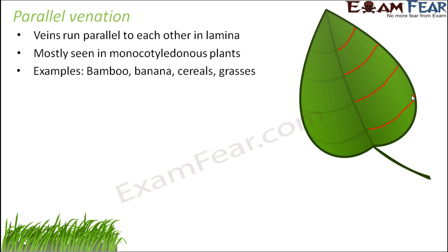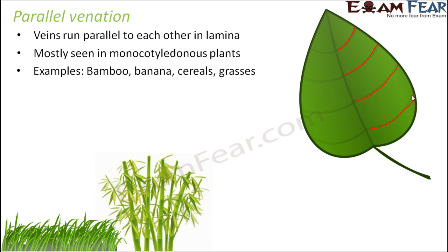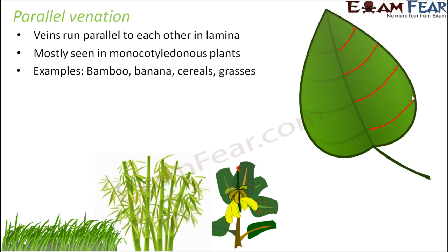Parallel venation is generally seen in monocotyledonous plants like bamboo, banana, cereals, and grasses. To compare parallel venation with reticulate venation, you can take a hibiscus leaf and a grass leaf and compare them — you will very clearly see the difference between parallel and reticulate venation.